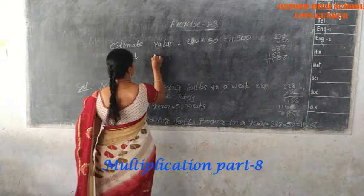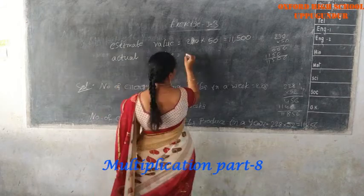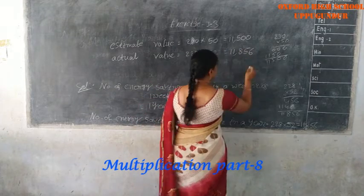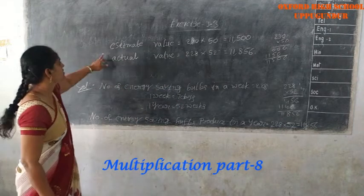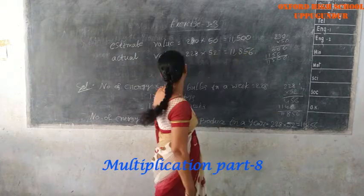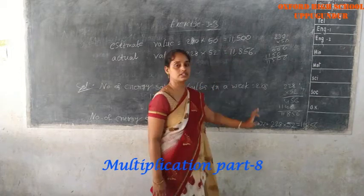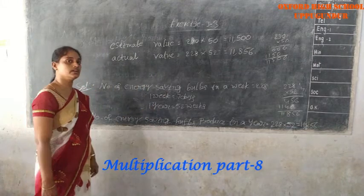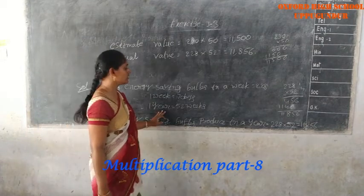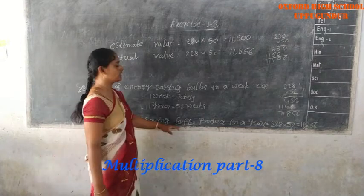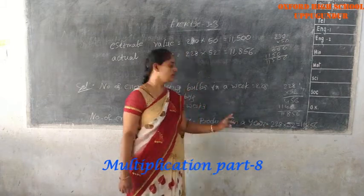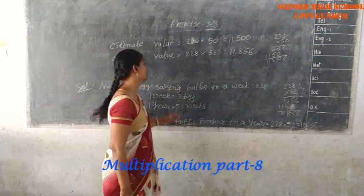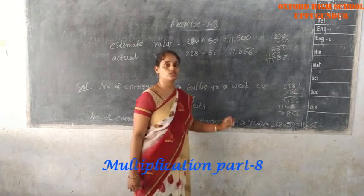Actual answer: 228 into 52 equals 11,856. So estimate value is 230 into 50 equals 11,500, and actual value is 228 into 52 equals 11,856.